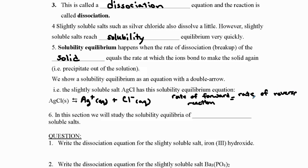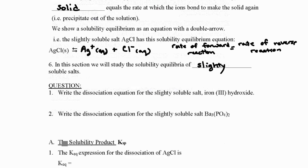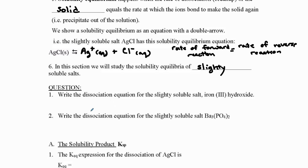This is no different from any other equilibrium equation we've looked at. We're going to study the solubility equilibria of slightly soluble salts — ones that read 'low solubility' on our chart. They do dissociate slightly but not completely, so they reach this equilibrium very quickly. Let's practice a few more dissociation equations to remind ourselves how to do that. We're going to write the dissociation equation for the slightly soluble salt iron(III) hydroxide.